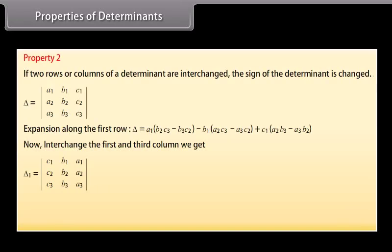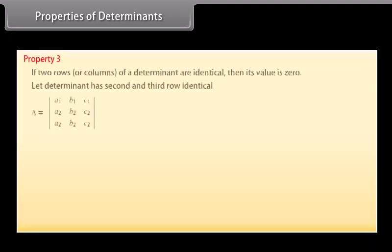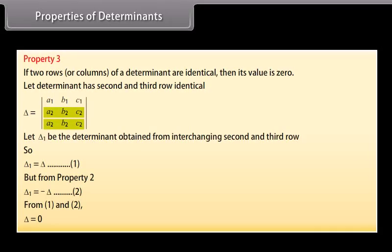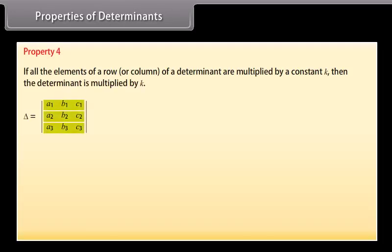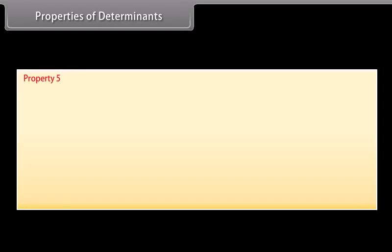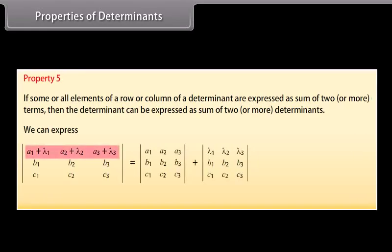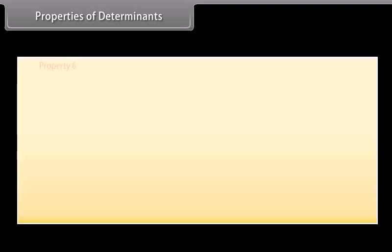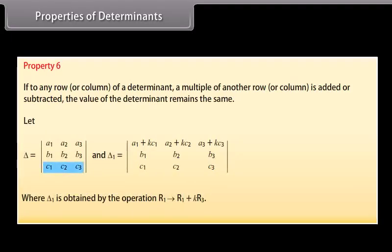Properties of determinants. Property 1: the value of a determinant remains unchanged if its rows and columns are interchanged. Property 2: if two rows or columns of a determinant are interchanged, the sign of the determinant is changed. Property 3: if two rows or columns of a determinant are identical, then its value is zero. Property 4: if all the elements of a row or column are multiplied by a constant k, then the determinant is multiplied by k. Property 5: if elements of a row or column are expressed as a sum of two or more terms, the determinant can be expressed as a sum of two or more determinants. Property 6: if any row or column has a multiple of another row or column added or subtracted, the value of the determinant remains the same.